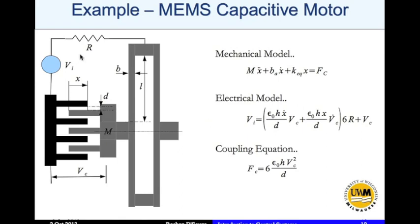What I've done here is applied Kirchhoff's laws: vi = i*R + vc, where R is the resistance shown. The six times R accounts for the six capacitors in parallel. The coupling equation couples the electrical and mechanical domains, and the force fc is given by: fc = 6 * epsilon * h * vc² / d.